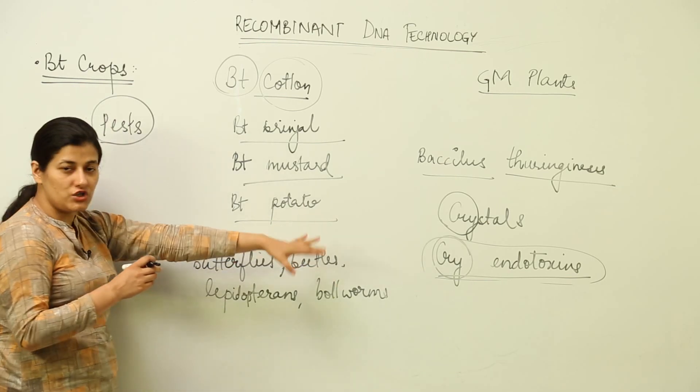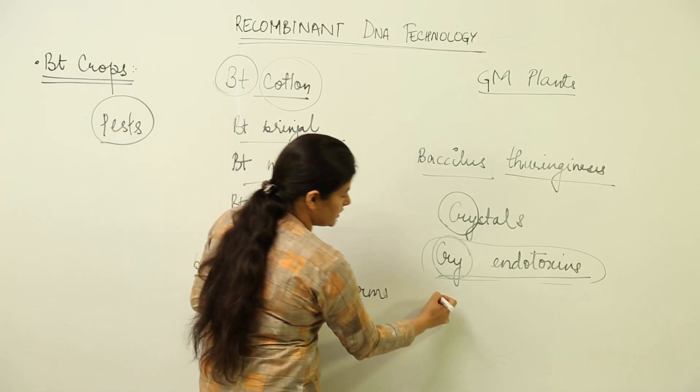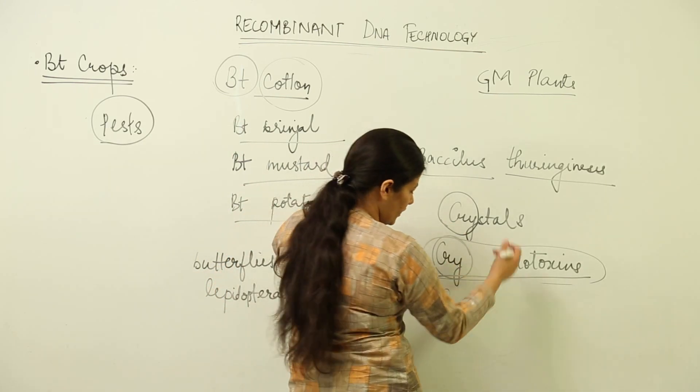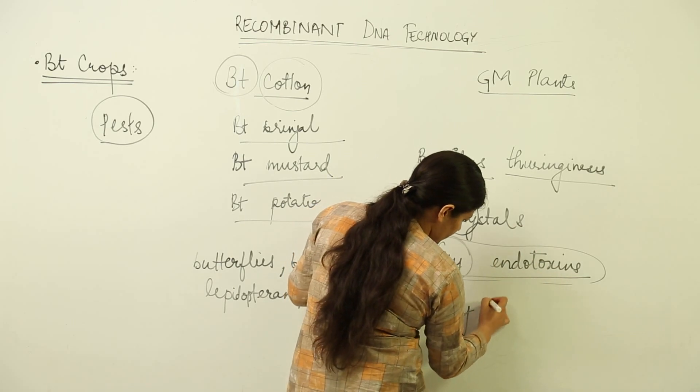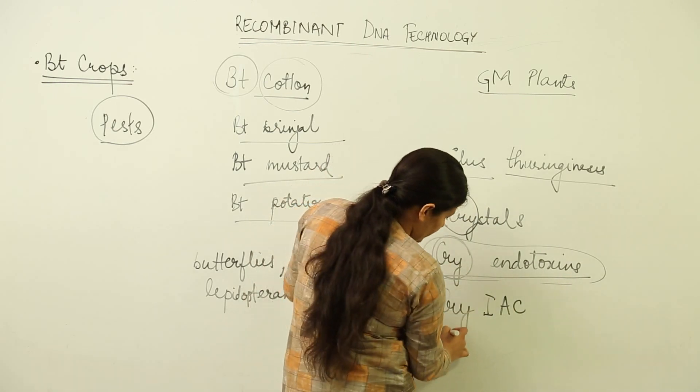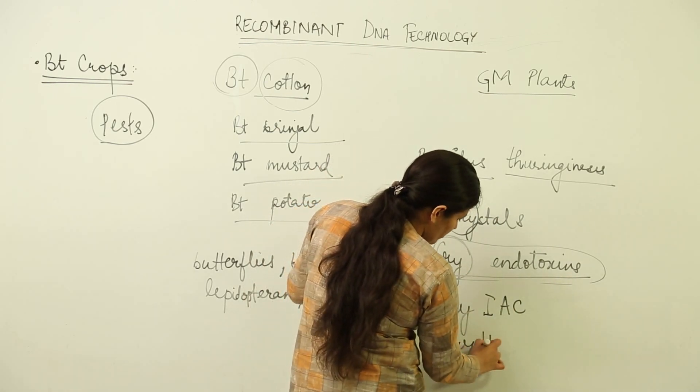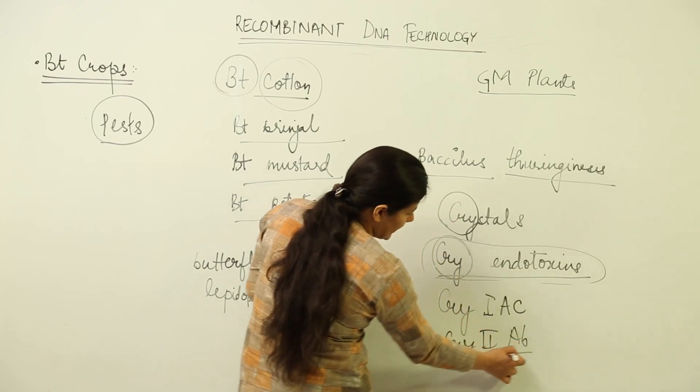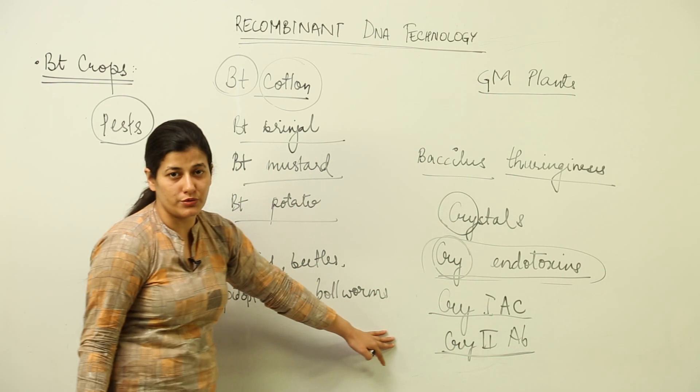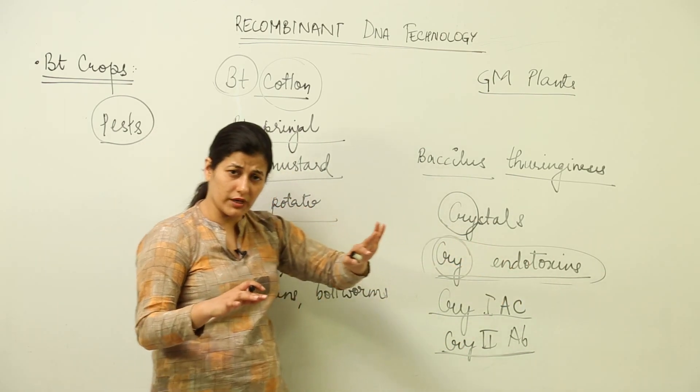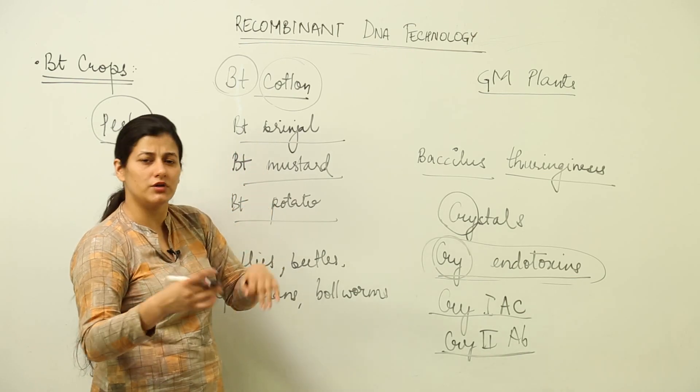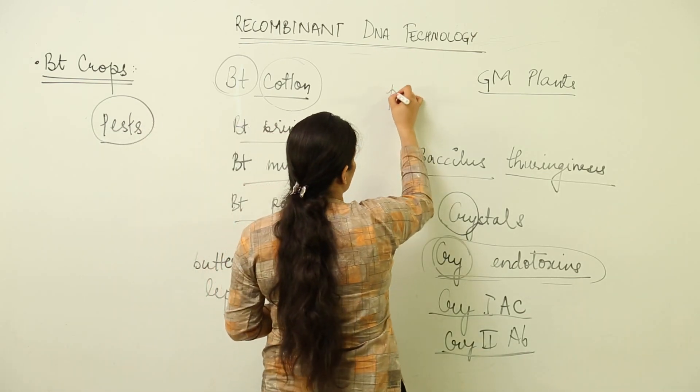The gene responsible for this is named according to this cry endotoxin category - cry 1ac and cry 2ab. These are the two genes which are responsible for producing cry endotoxin. The toxin is produced inside the cotton leaves or in the entire plant in the form of protoxin.